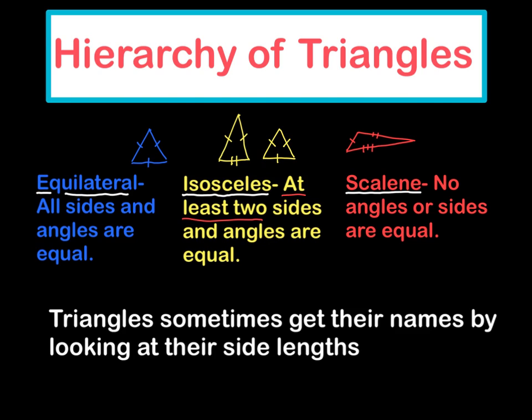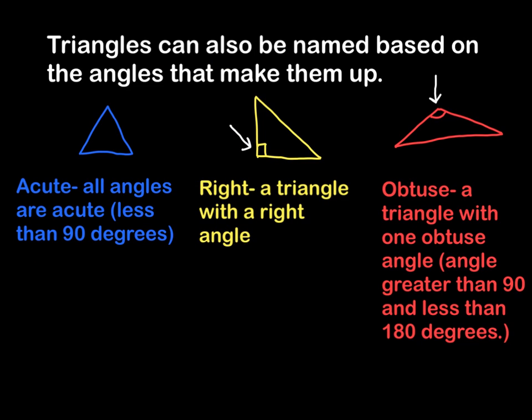So now let's take a look at another way that triangles can get their names. Triangles can also be named based on the angles that make them up. So we have acute triangles, we have right triangles, and then we have obtuse triangles.